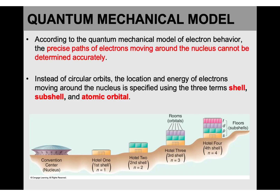What we talk about are these three terms, which are really used a lot when you want to talk about the address of electrons: shell, subshell, and atomic orbital.